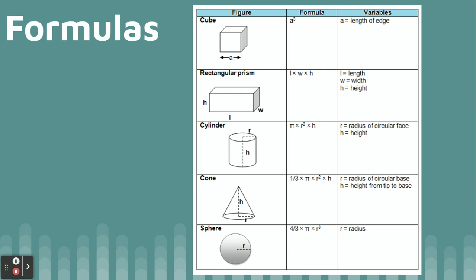When we found perimeter, it was walking the outside — this side plus this side plus this side plus this side. If we wanted to know the area of a lid, it would be length times width — how much space the whole top of the lid is. Volume is different. Volume is 3D shapes, and you've got to be able to put something in it. Volume is how much it can hold.